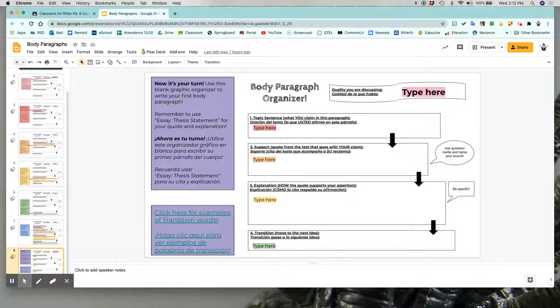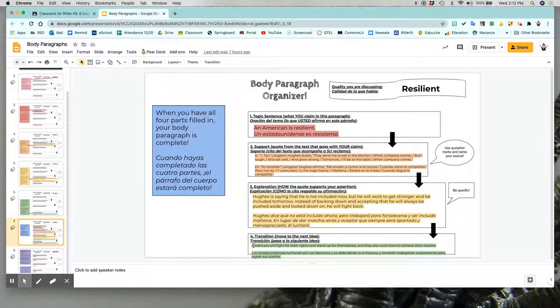If you need some examples of words to use as transitions in this last sentence, you can click here. This link will take you to a PDF of transition words. You are also welcome to use this as a sentence frame: Americans will blank and they also blank, and you can plug in your words in there.